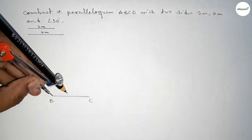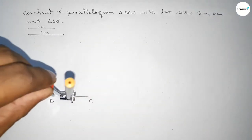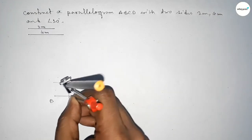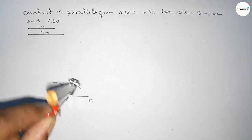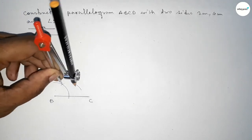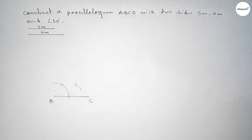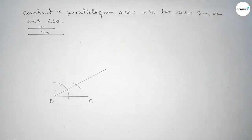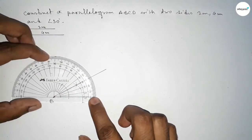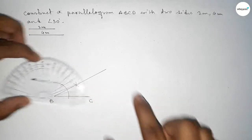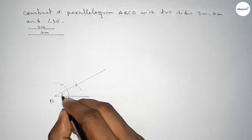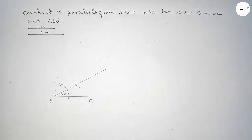Now we have to draw a 30 degree angle at point B. Putting the compass here and taking any length, drawing an arc, then putting the compass with the same length and cutting here, drawing another arc with the same length and cutting again so both curves intersect at a point. Joining this line gives us a 30 degree angle — checking this angle, it is perfectly 30 degrees.